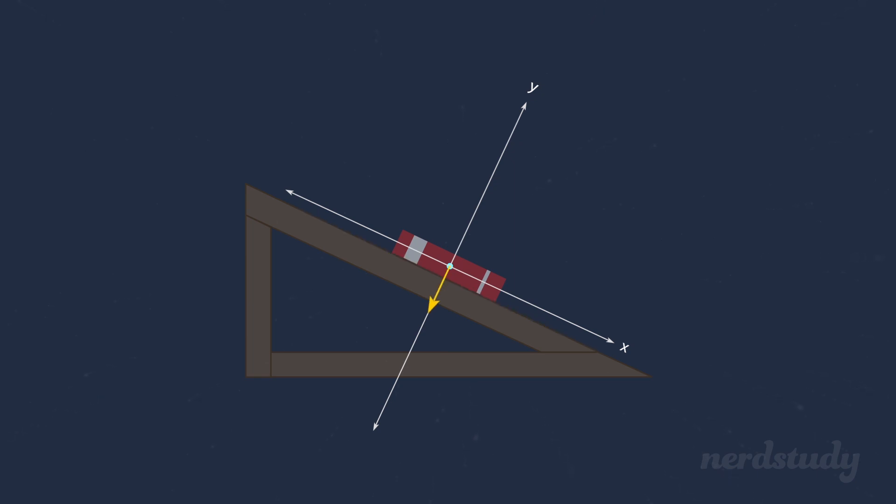But if a force in this direction causes the ramp to produce a force that cancels it out, the cancelling force must be in this direction. And that direction is perpendicular to the surface of the ramp, or as some people might say, normal to the ramp. So the normal force must point in that direction.